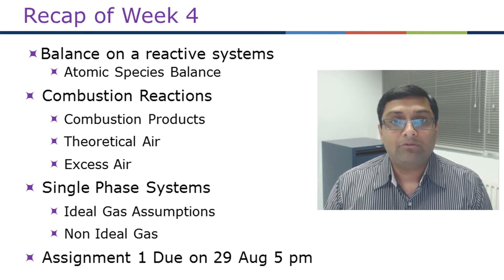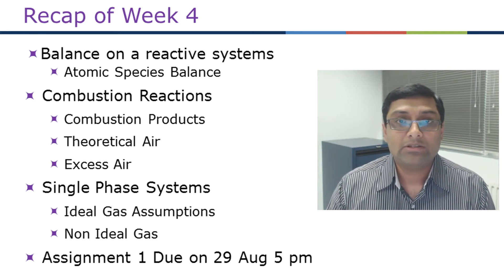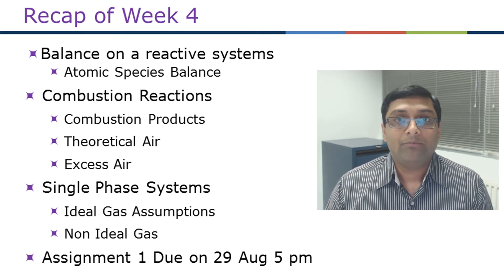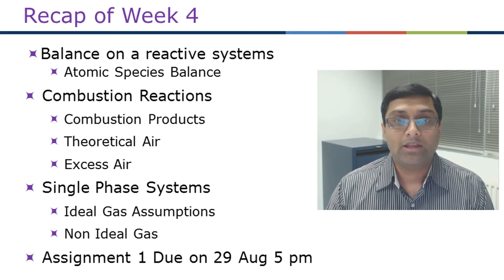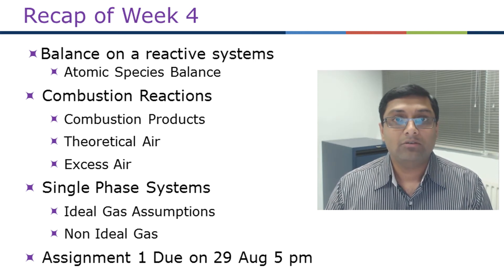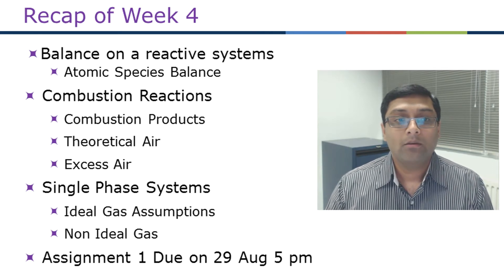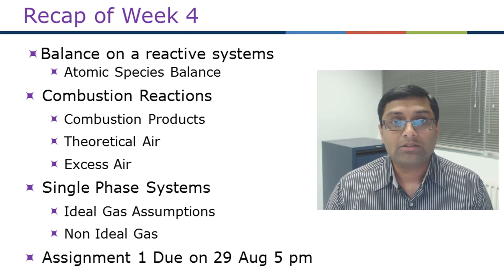Then we looked at chapter 5, which talks about calculating specific volumes for liquids as well as for gases. For liquids we look at densities normally, which is the inverse of specific volume. We found that specific volume or density of a liquid cannot be calculated theoretically — it has to be experimentally determined. But for gases we have very good theories for calculating specific volume. The most applied and simplest of these equations is the ideal gas equation of state, which defines pressure times volume equals the number of moles of a gas times temperature multiplied by the universal gas constant.